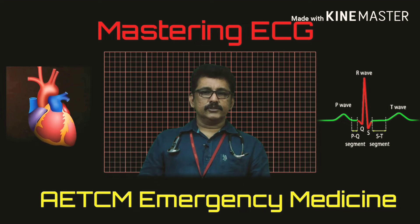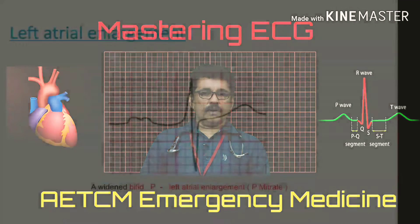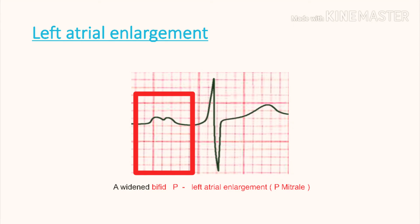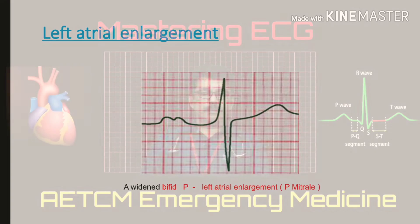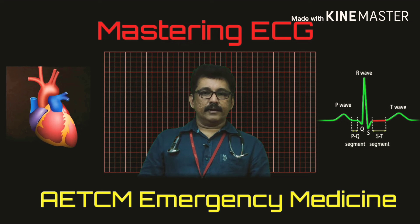This ECG shows a wide notched P-wave that is more than 2.5 divisions — a classical finding of left atrial enlargement. This finding is called P-mitrale, which is an M-shaped P-wave.